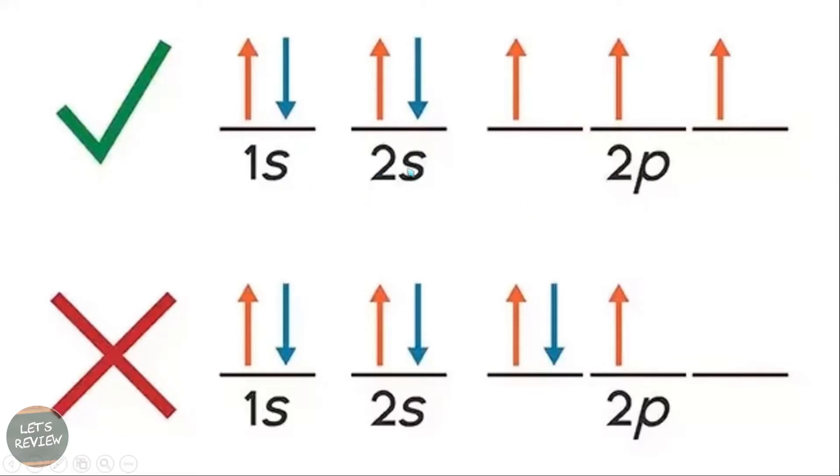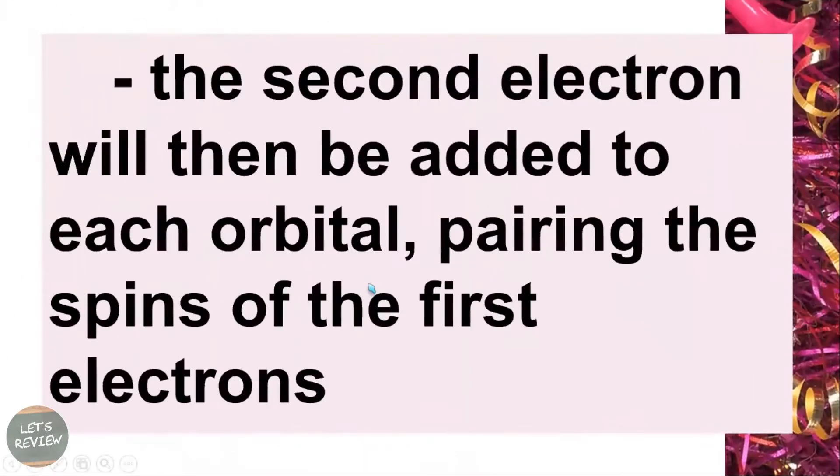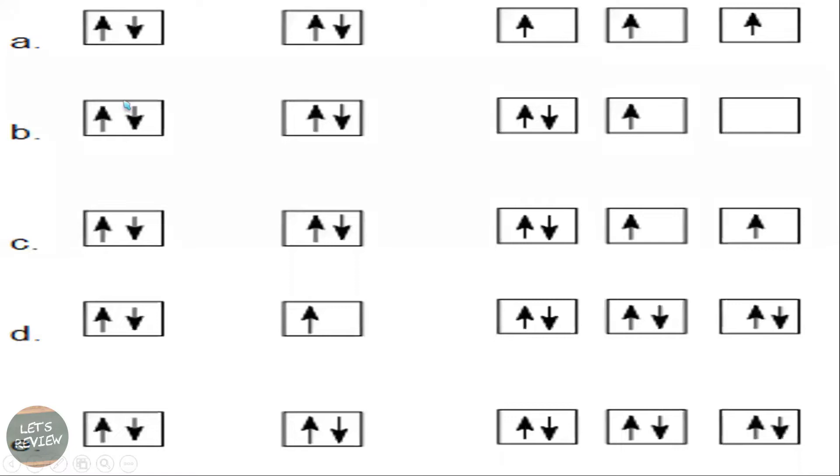So in this case, the S and P here represents the orbital shape. There you go. So this is the proper way to do that. The second electron will then be added to each orbital, pairing the spins of the first electrons, counterclockwise and then clockwise if you're going to pair it.